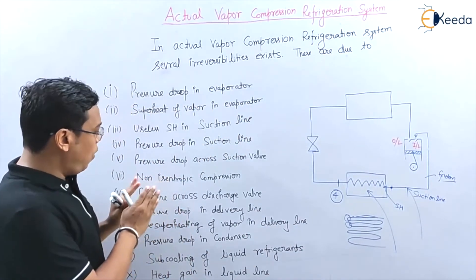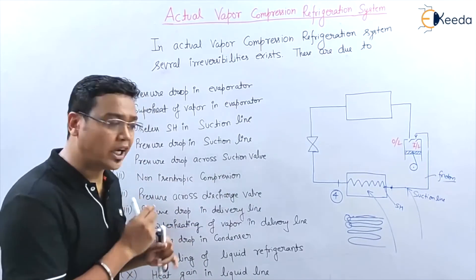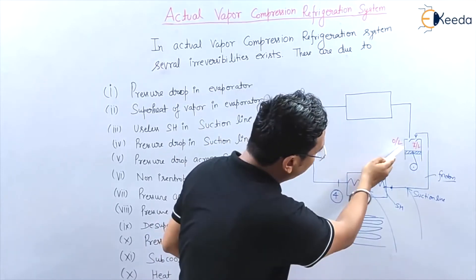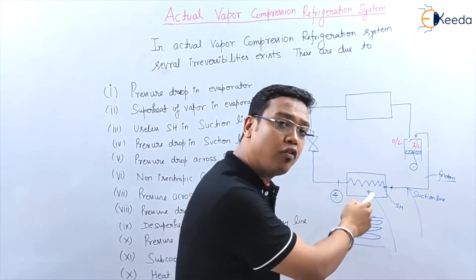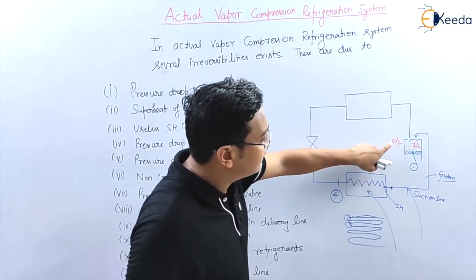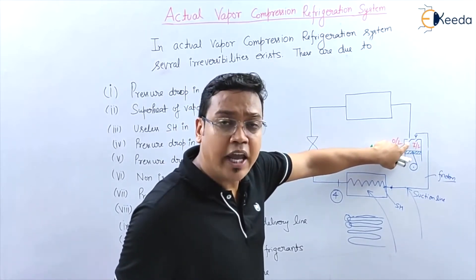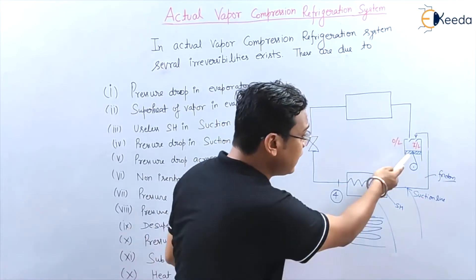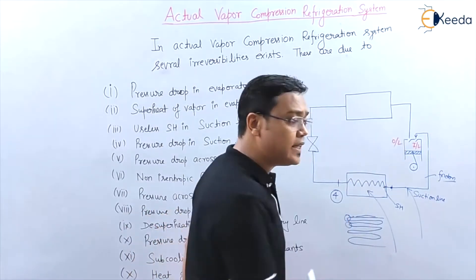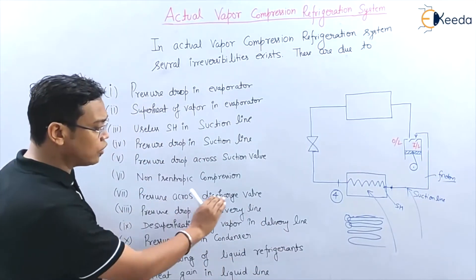The next point is pressure drop across the discharge valve. When compression is complete, the refrigerant is discharged through the outlet or discharge valve. The opening of this valve resists the flow of refrigerant, causing a pressure drop across the discharge valve.